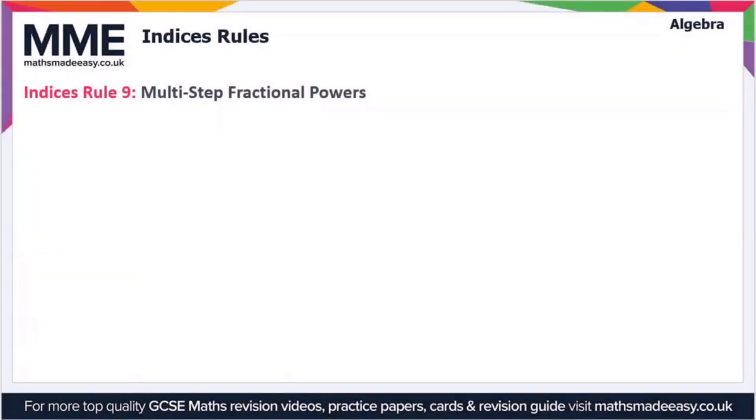So moving on to rule nine then, this is multi-step fractional powers. This is essentially just an extension of rule number eight. So if we have an example 64 to the power two over three, in this instance the numerator is bigger than one so this is multi-step at this point. So we can rewrite this expression as the cube root of 64 squared.